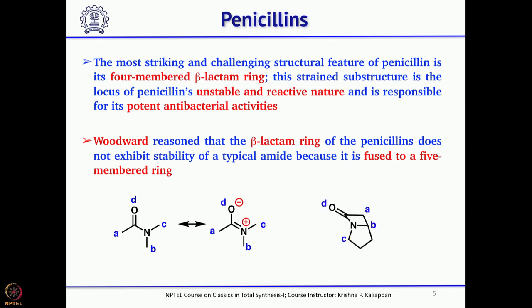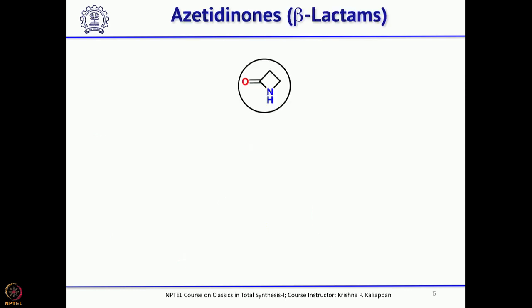As Woodward explained, the beta-lactam is not like a normal amide. In a normal amide, resonance can exist freely, whereas in the 4-membered lactam this resonance cannot operate in the same way. That is where the high reactivity of beta-lactam comes into play. If you look at the literature on how beta-lactams were made, the parent 4-membered structure with NH is called azetidine.